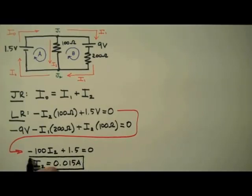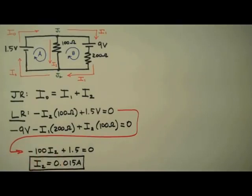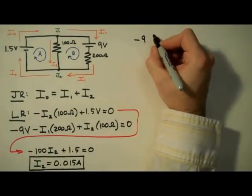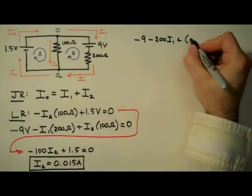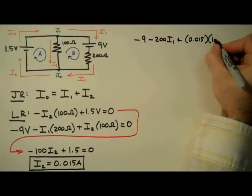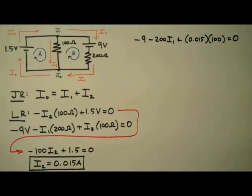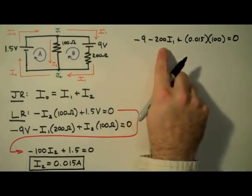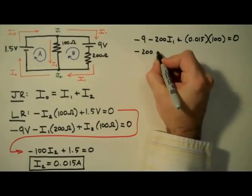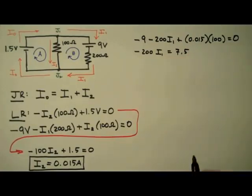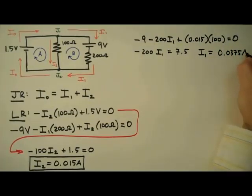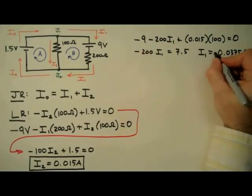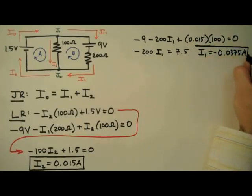Now I'm going to use this value to solve for I1 in the equation above. I'll plug it in and solve for I1, dropping units again. By the way, if you're comfortable with linear algebra, you may want to set these equations up in a matrix — that is often a much simpler way of handling the algebra. In this case, I'm just going to plug and chug. This product is equal to 1.5 volts, and moving terms gives negative 200 I1 equals positive 7.5. So I1 equals negative 0.0375 amps, or negative 37.5 milliamps.